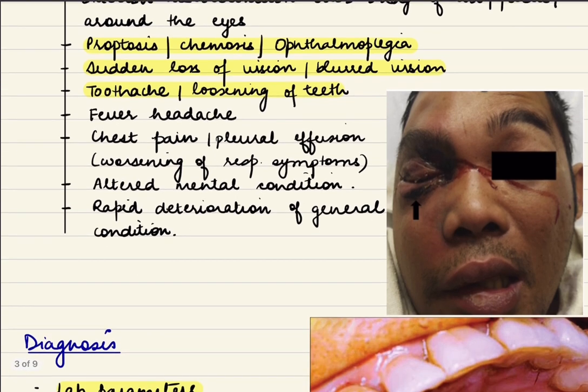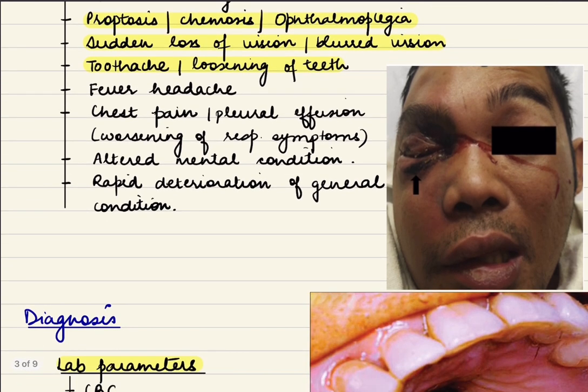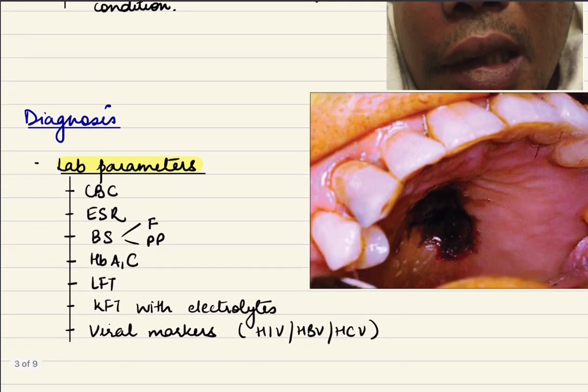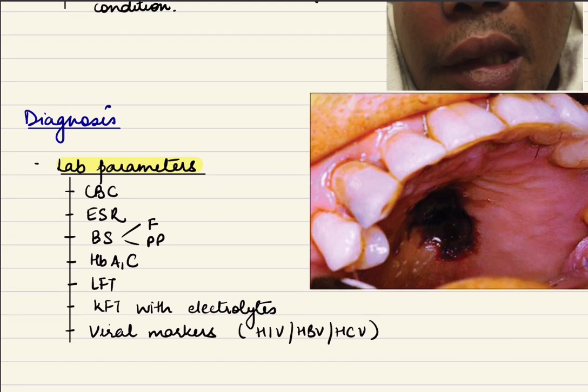As you can see in this picture, there is blackening of the skin around the eyes. This is characteristic of mucormycosis. Similarly, you can see blackening of the palatal area.